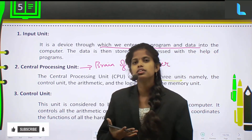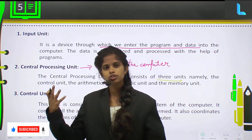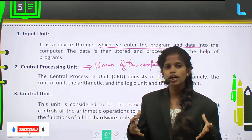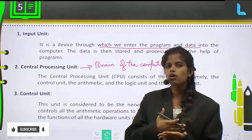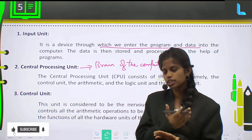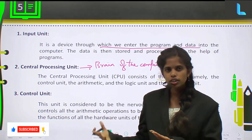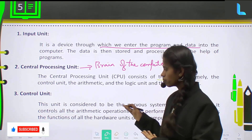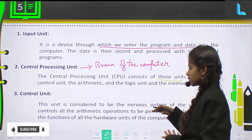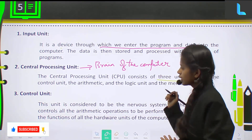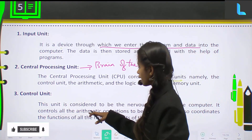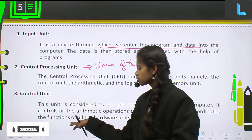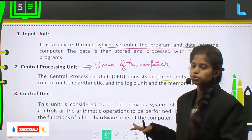Even humans have a nervous system used for controlling signals throughout the body — communication happens from each part of the body through the nervous system, carrying information from one part to another. In the same way, the control unit acts as the nervous system of the computer. It controls all the arithmetic operations to be performed and also coordinates the functions of all the hardware units of the computer.